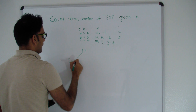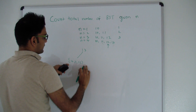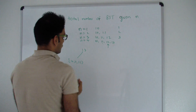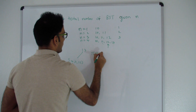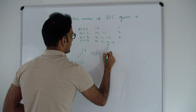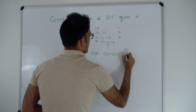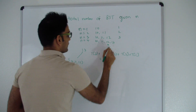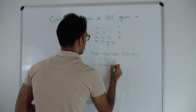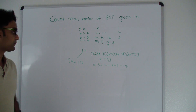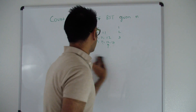When 13 is the root, 10, 11, and 12 all go on the left side, giving T(3)=5 combinations. So the total number of trees when n=4 is: T(3) + T(1)×T(2) + T(2)×T(1) + T(3) = 5 + 2 + 2 + 5 = 14.